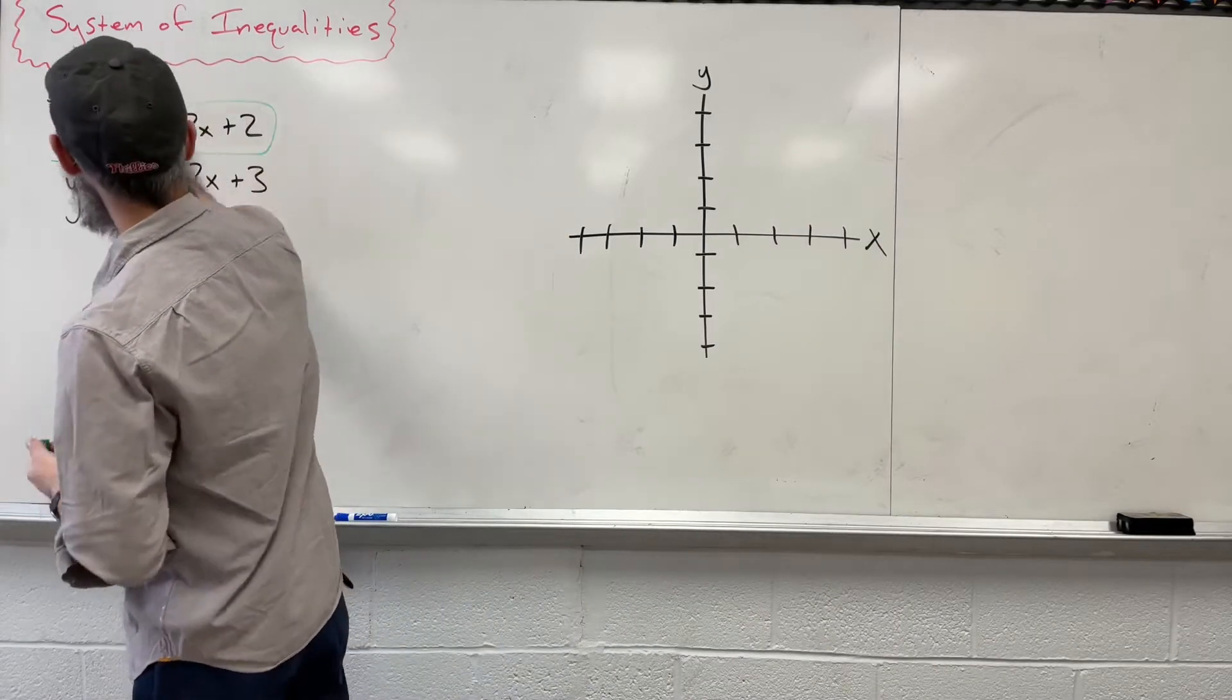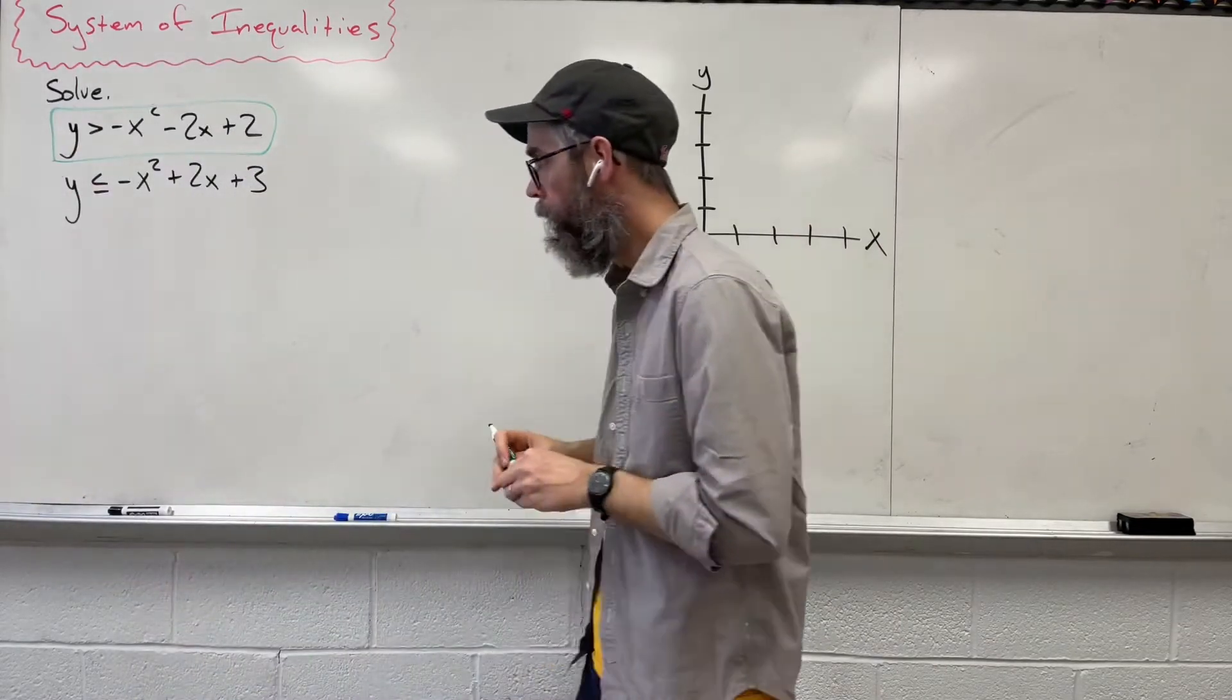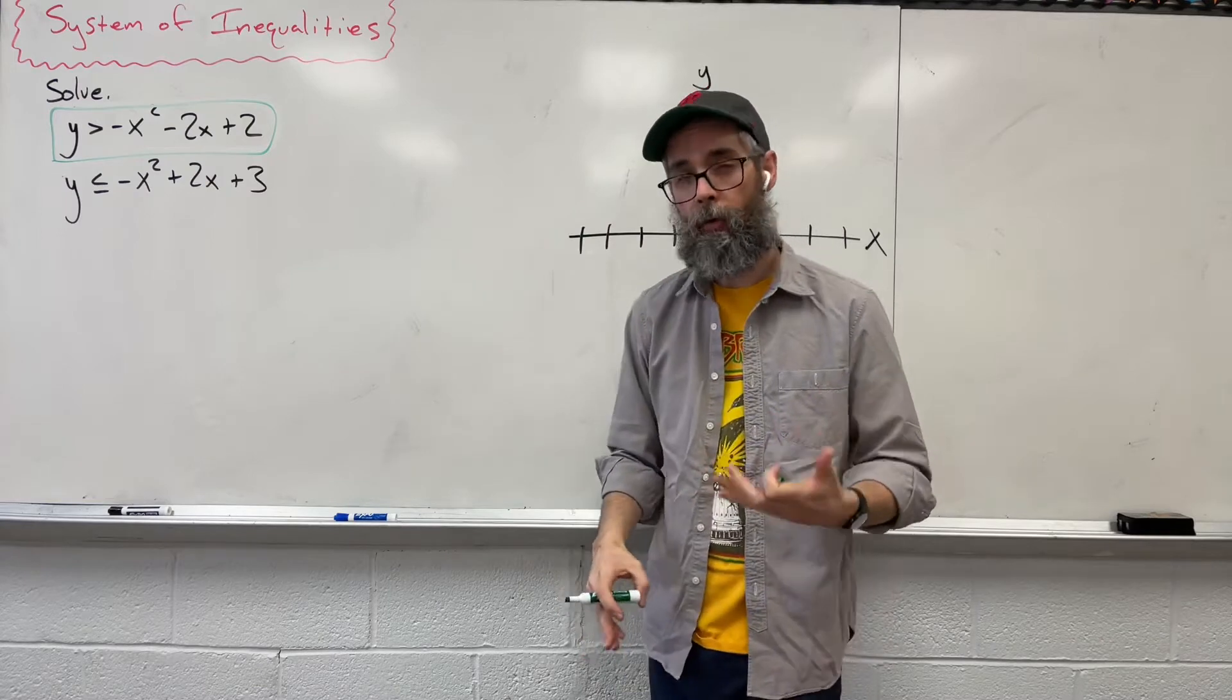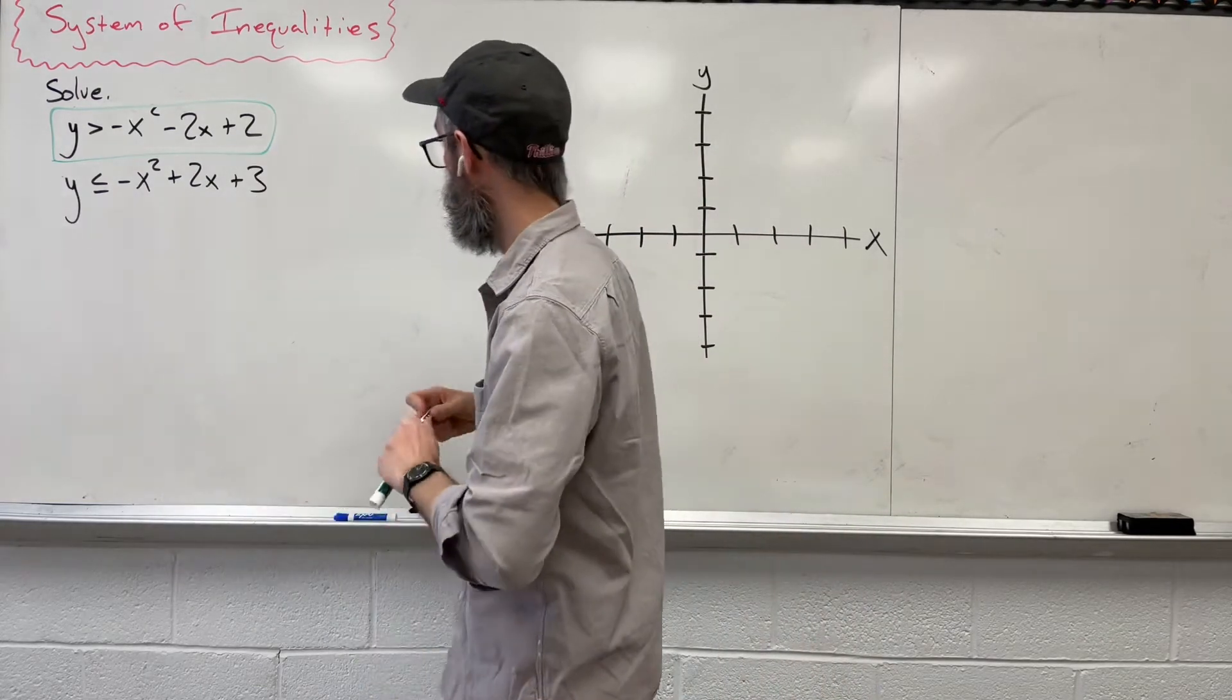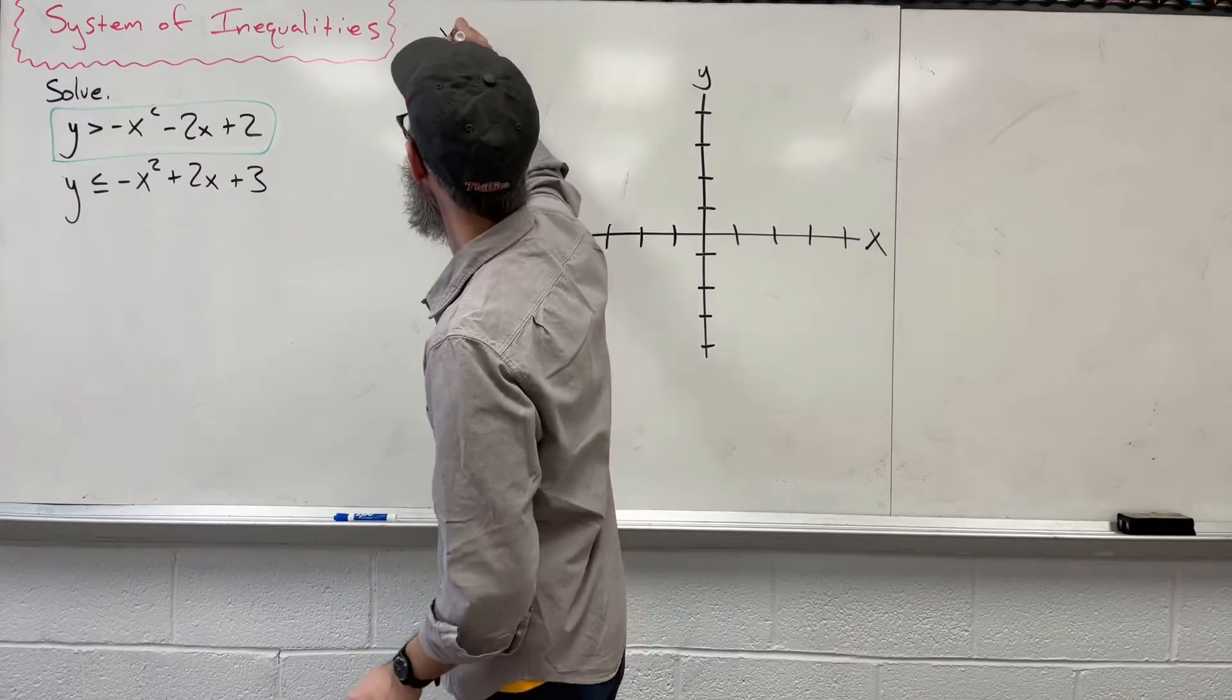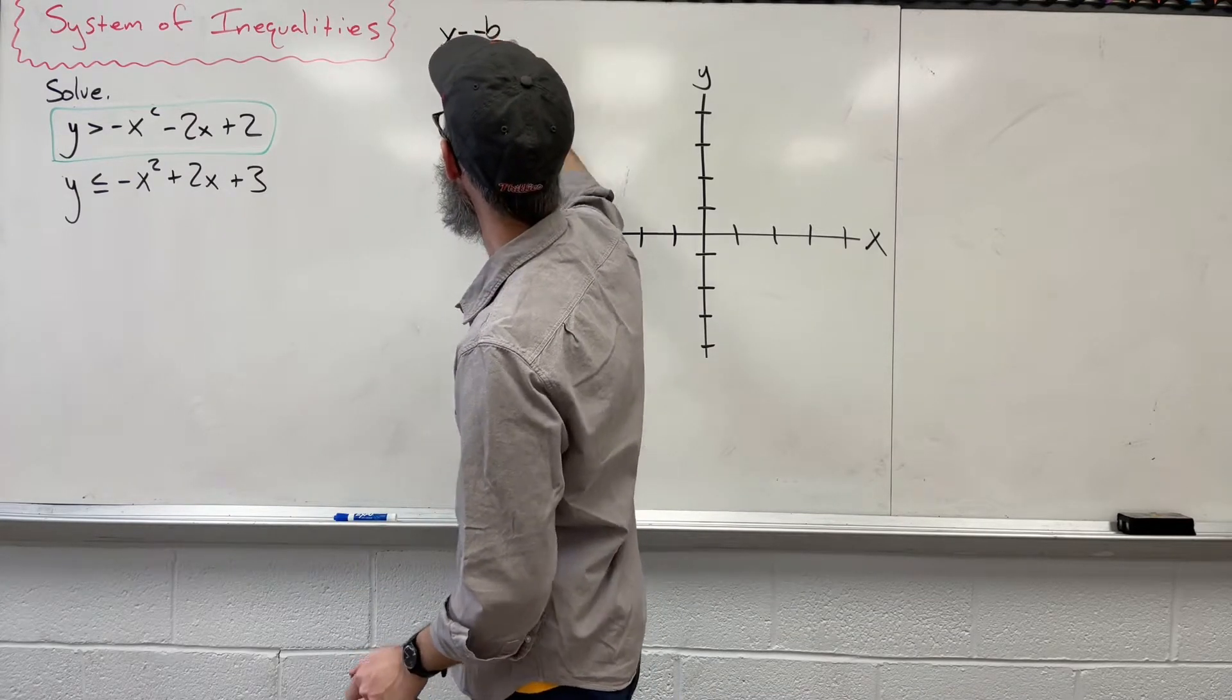First one, we're going to look at in green. Like any quadratic, you'll always want to start off finding the axis of symmetry. What is the formula for that? Well, x equals negative b over 2a.